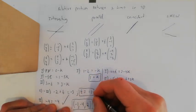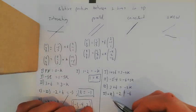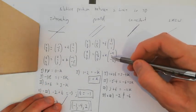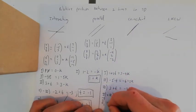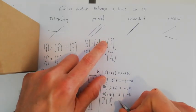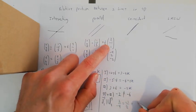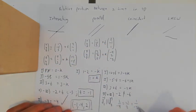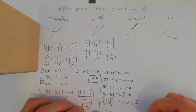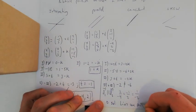When the system has no solution, the lines are either parallel or skew, so I need to check if the direction vectors are proportional. Checking: 2/(−4) = −1/2 = 1/(−2). Since these are proportional, the lines are parallel. The system has zero solutions because the lines don't intersect at any point.